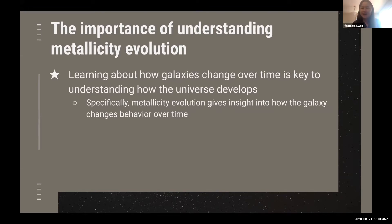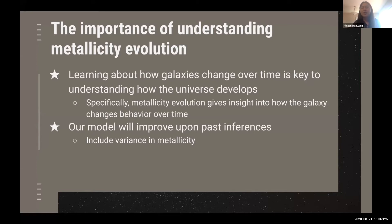There have been models in the past that have modeled chemical evolution, but our model specifically will improve upon past inferences by including a variance parameter in the metallicity. In most previous models, they only find the mean metallicity, which sort of overlooks the spread. In reality, metals don't mix evenly within a galaxy, so there is some scatter and spread. By including the variance parameter, we will be able to better understand not only the metallicity, but the metallicity distribution within the galaxy.